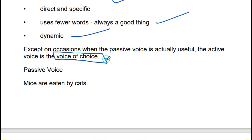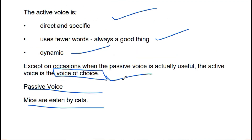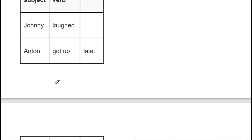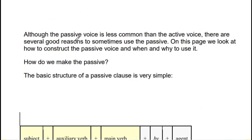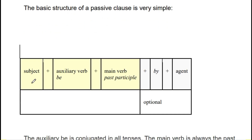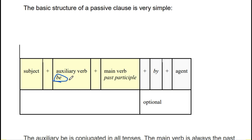Although the passive voice is less common than the active voice, there are several good reasons to sometimes use it. Let's see how to construct the passive. First we take the subject, then the auxiliary verb which changes according to the tense — is, am, was, were, has, have, had, will be, shall be — then the main verb always in its past participle form, then 'by,' and then the object.